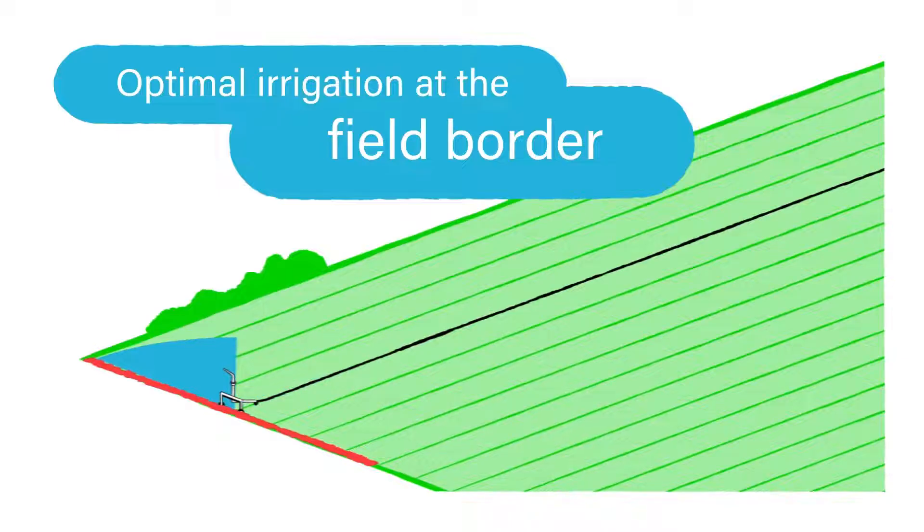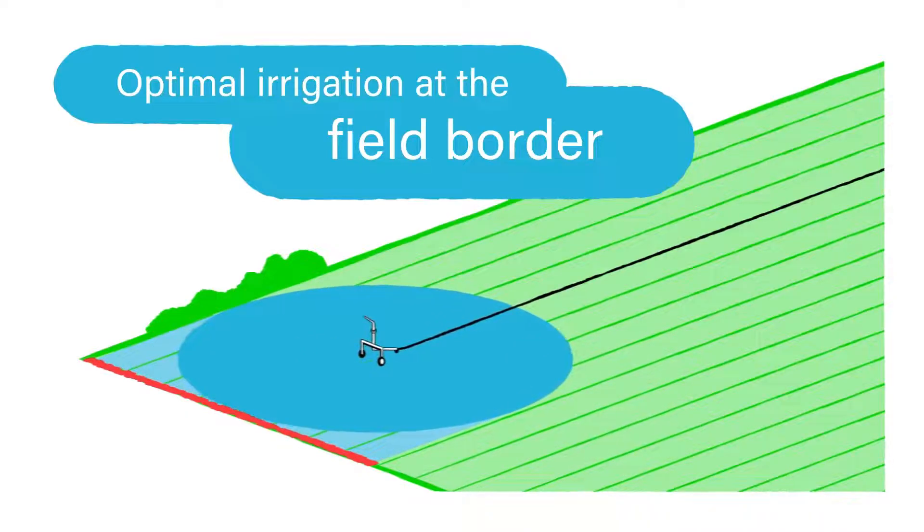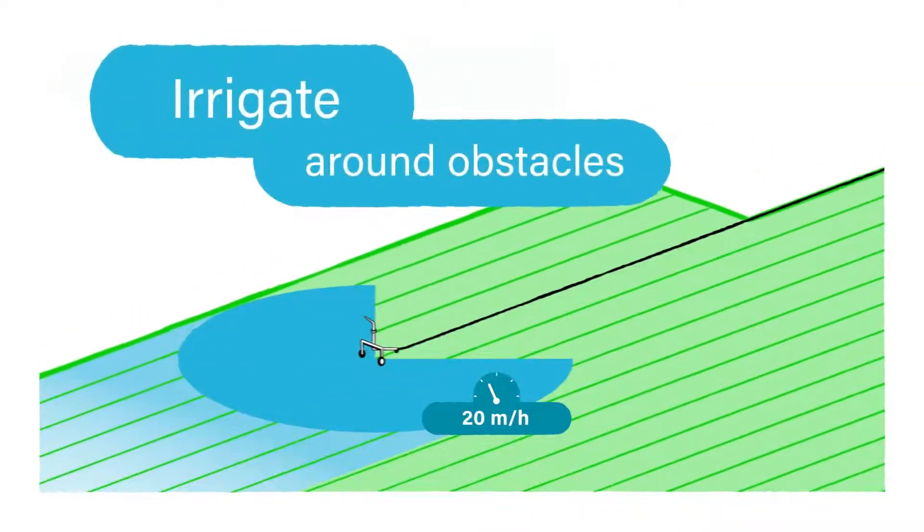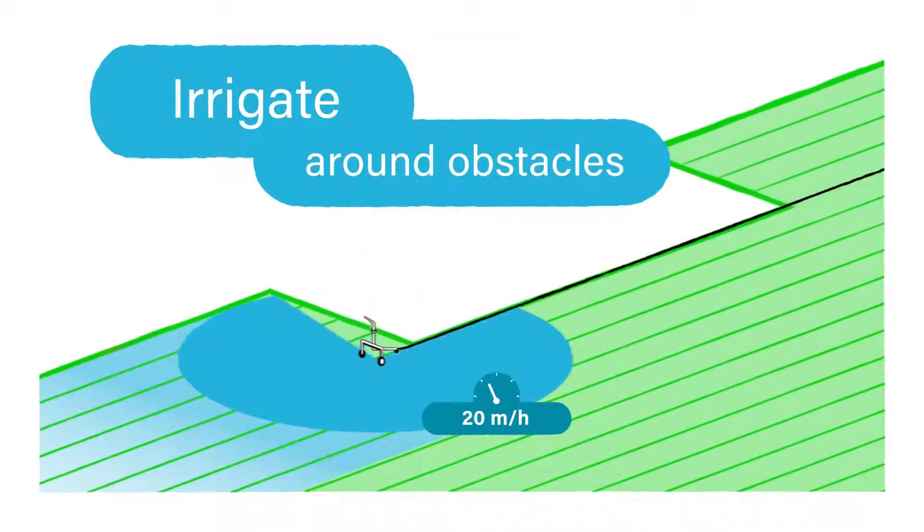So you'll have an equal water application in this critical area. The irrigated sector will be adjusted gradually and all water will be kept within the field boundaries. In case of an irregular field shape, Rain Dancer automatically irrigates around obstacles.